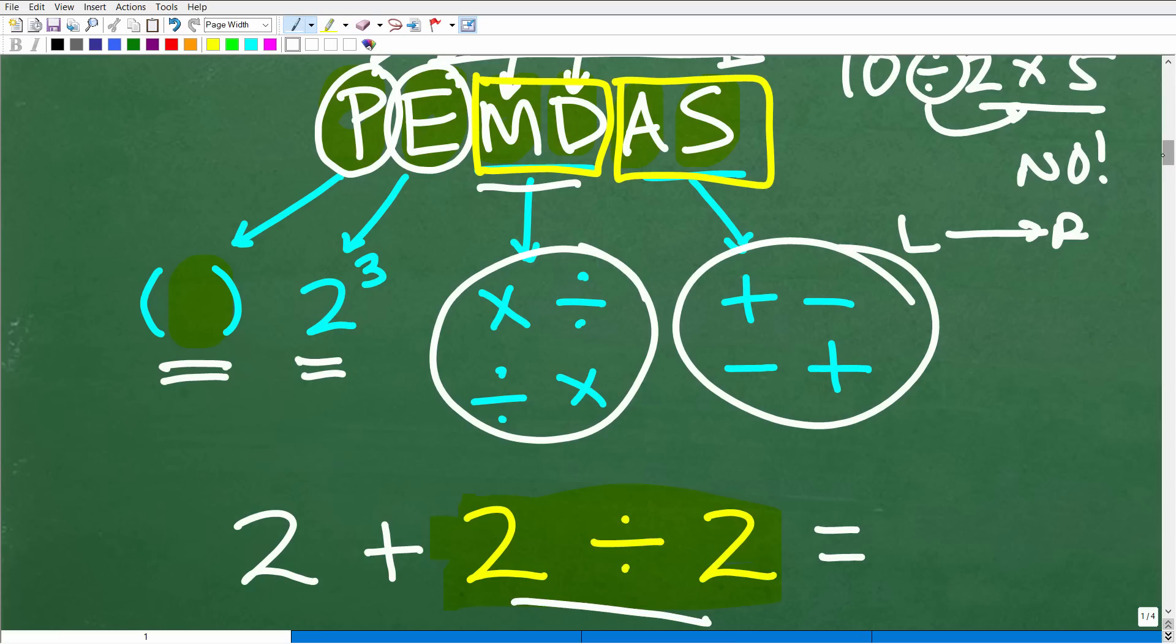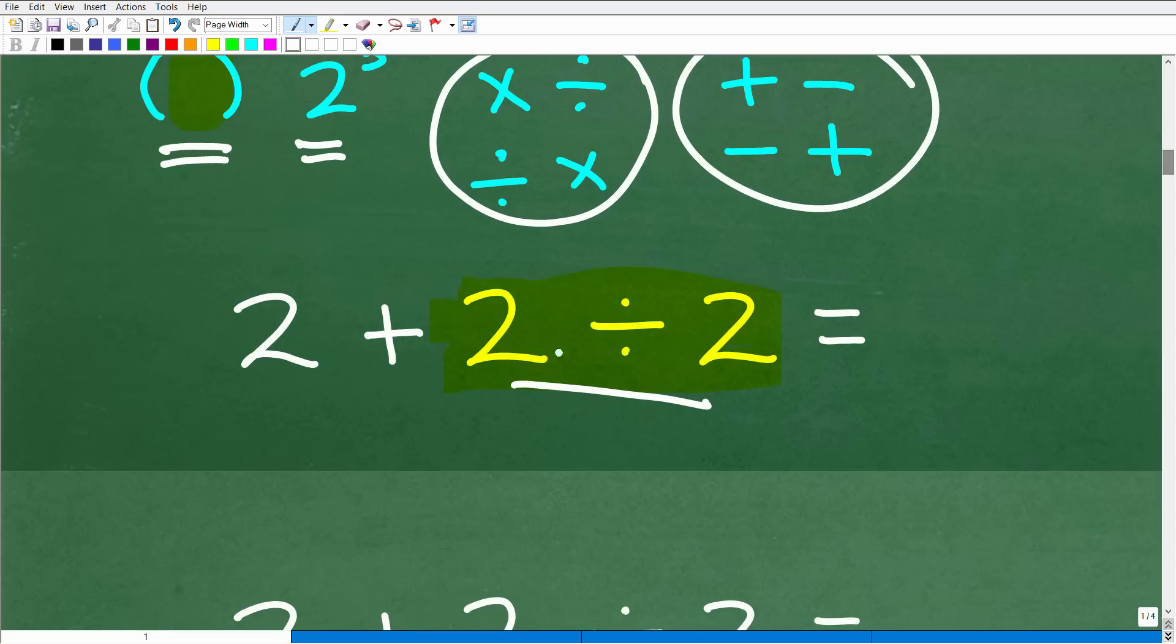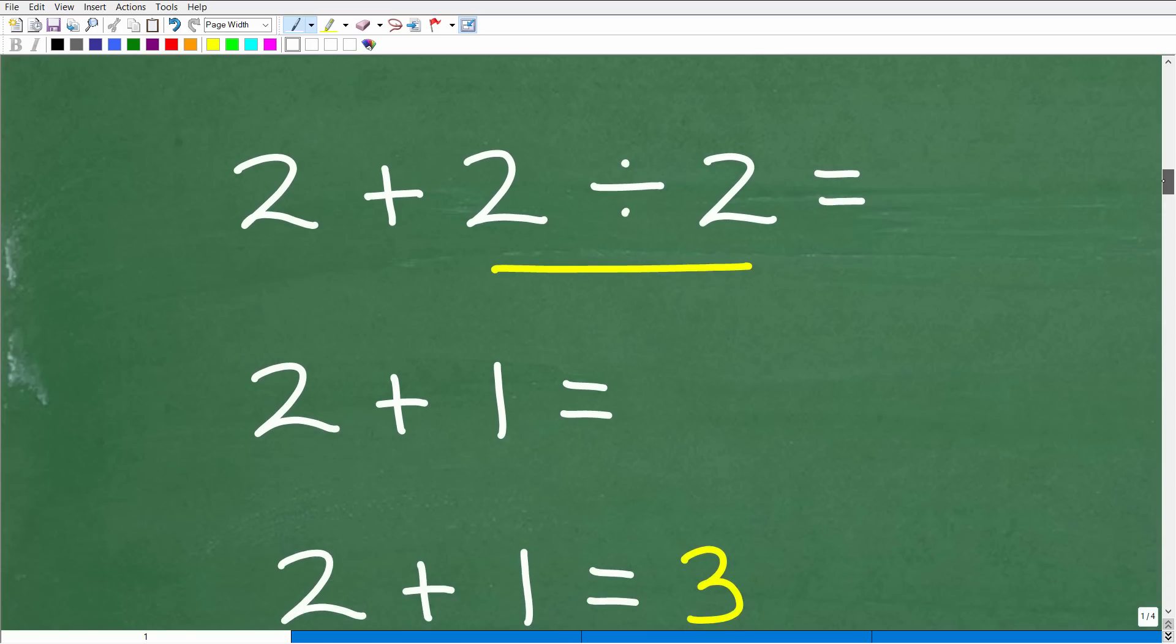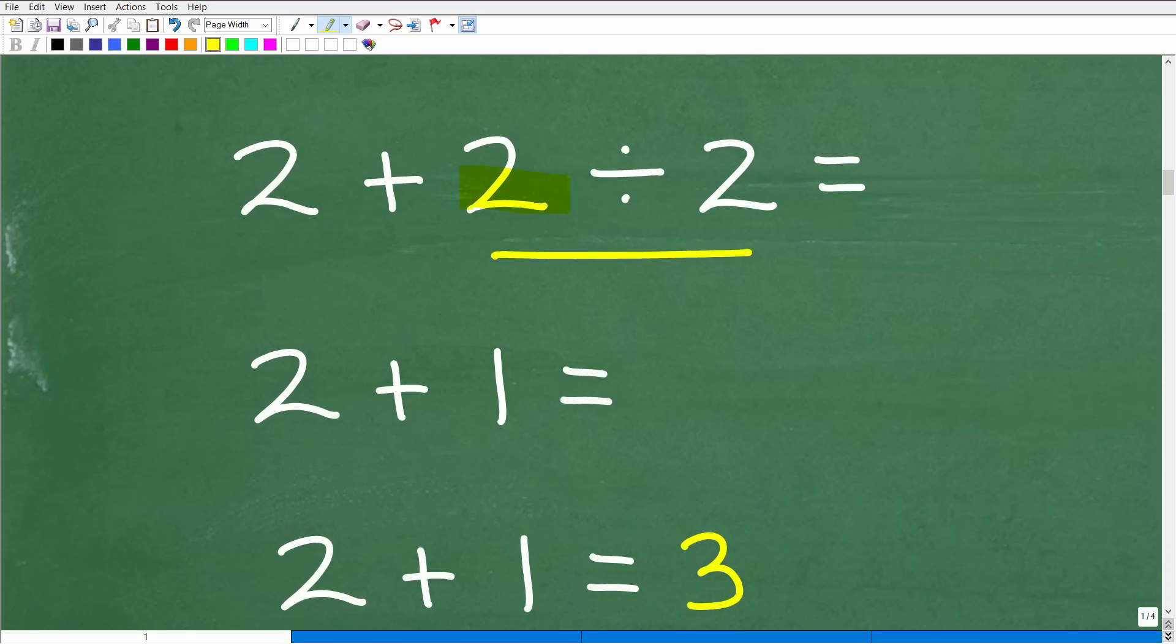So now, knowing that, we're like, oh, okay. This becomes very obviously easy to do. All right. So now, because of the order of operation, I'm going to take care of this part of the problem. 2 divided by 2 is 1, and 2 plus 1, of course, is 3, which is our answer.